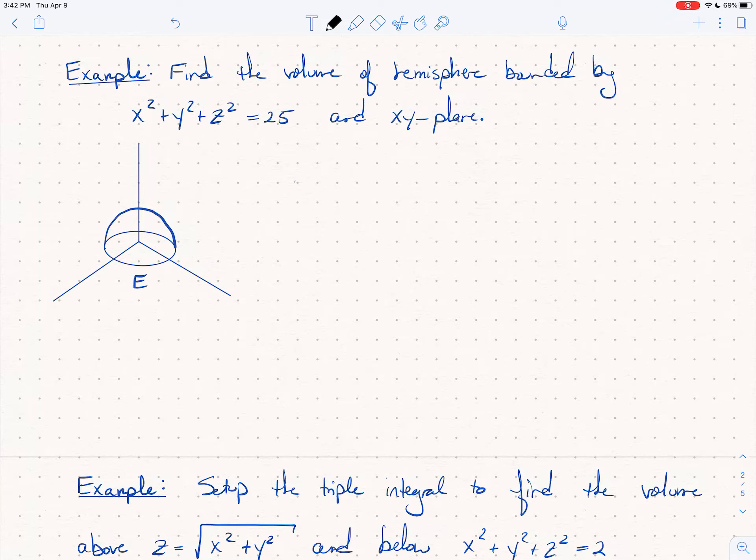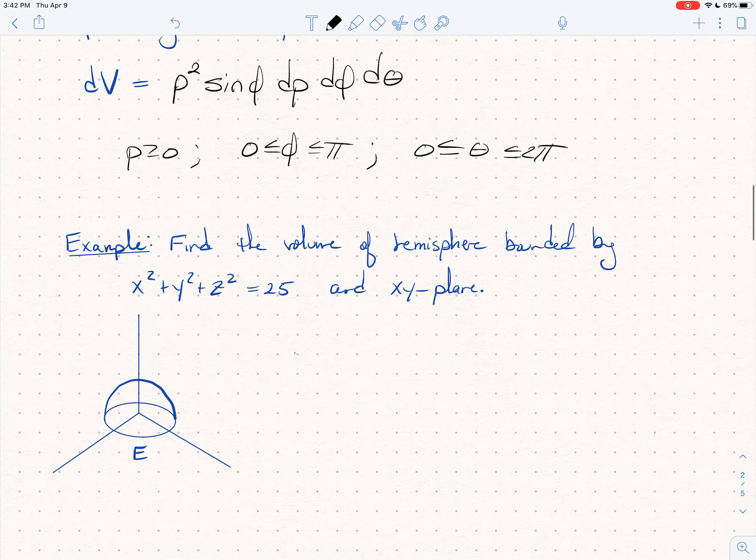So in the last video we learned how to switch to spherical coordinates. We need to use dV is rho squared sin phi, d rho, d phi, d theta.